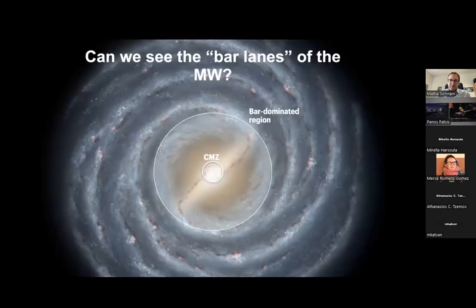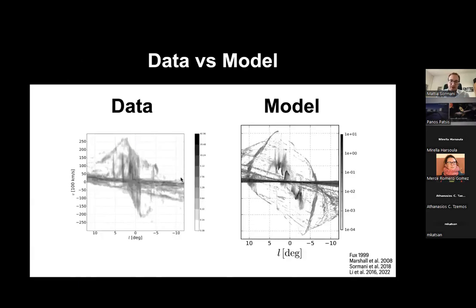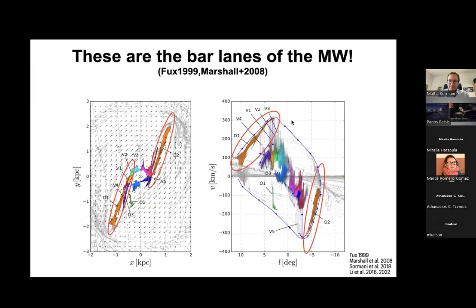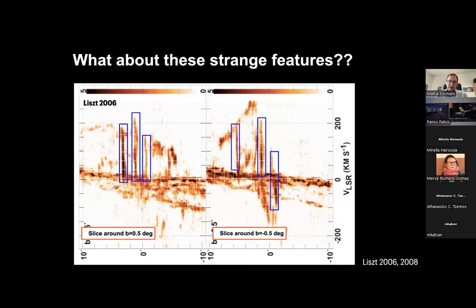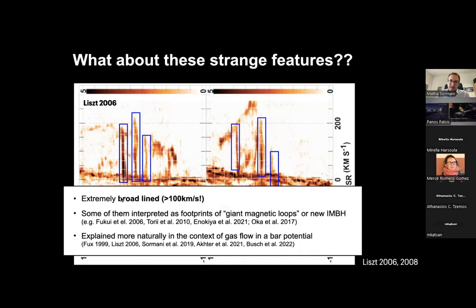Can we see the bar lanes of the Milky Way? They appear in the drawing so we should be able to see them — and indeed we do. Using the same method of comparing data and model, these features are the bar lanes of the Milky Way. The bar lanes are connected to something I find very interesting: extended velocity features. In the LV diagram you notice very prominent features that are localized in space but have extremely broad line widths — velocity spans of more than 100 km/s, sometimes more than 200 km/s.